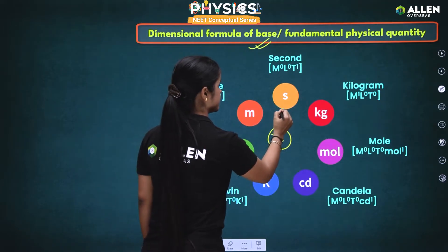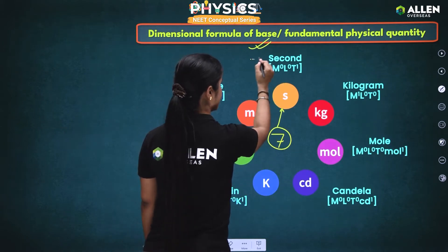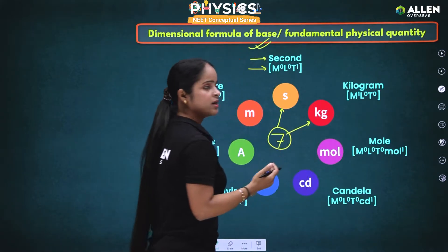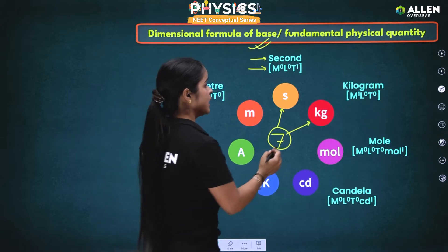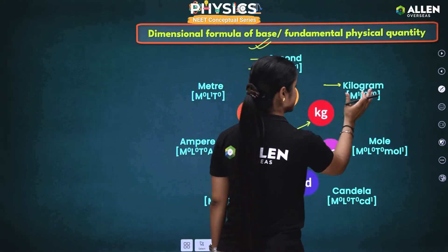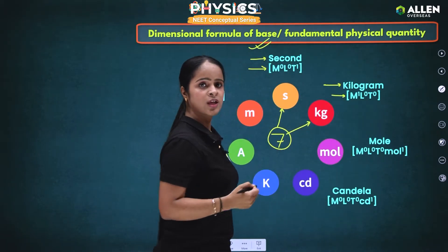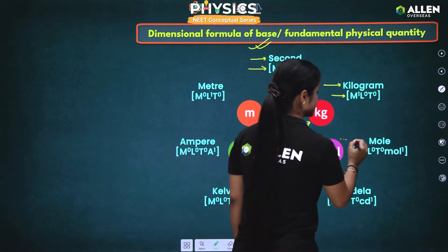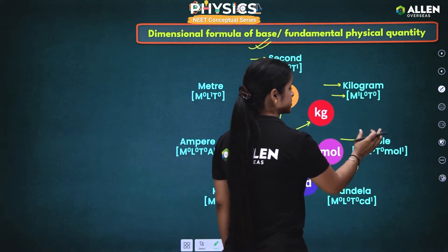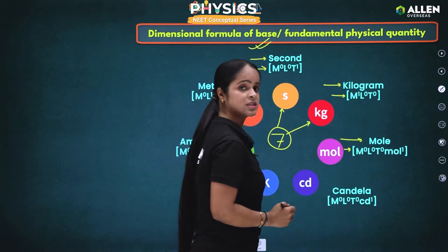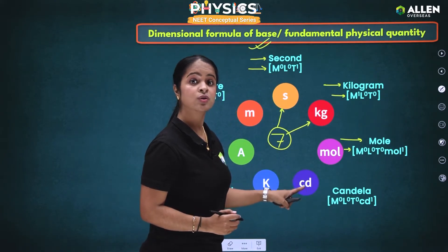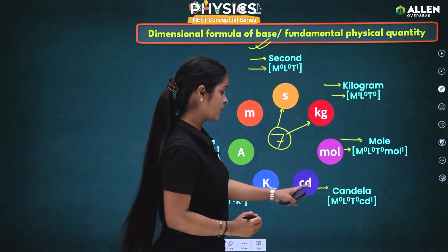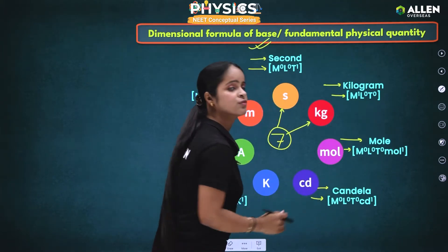The first fundamental physical quantity is time. The SI unit of time is second, and its dimensional formula is also written here. The second fundamental physical quantity is mass, with SI unit kilogram, and its dimensional formula is also shown. The third is amount of substance, with SI unit mole, and the dimensional formula is listed. The fourth is luminous intensity, with SI unit candela, and you can see its dimensional formula here as well.